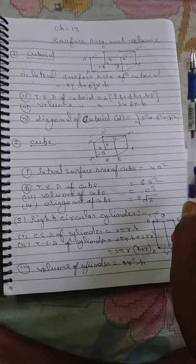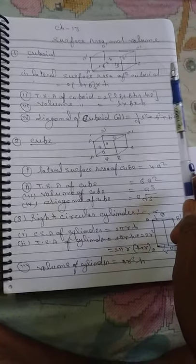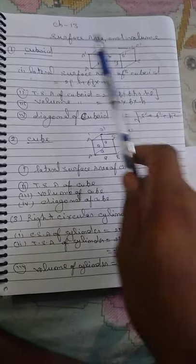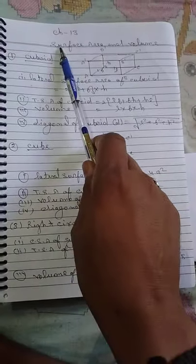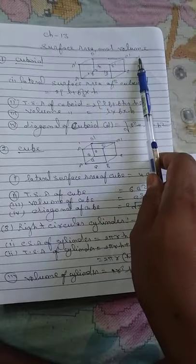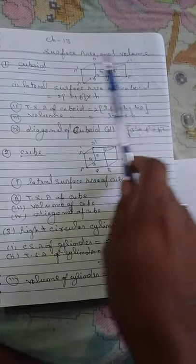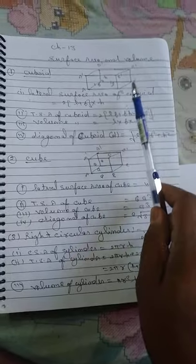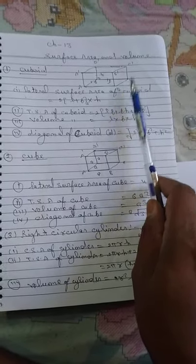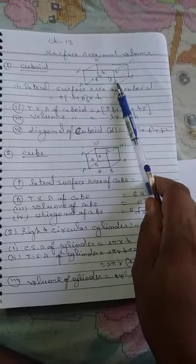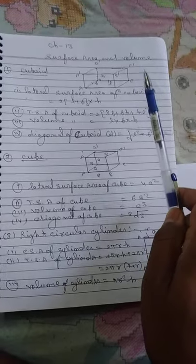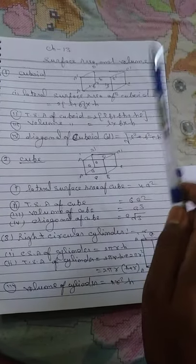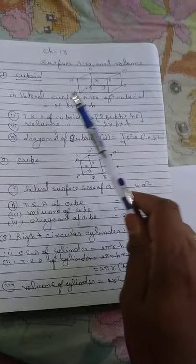Good morning students. Today in math class we are going to teach a new topic: surface area and volume. In this topic there are different 3D solids and 3D shapes like cuboid, cube, cylinder, cone, sphere, and hemisphere.